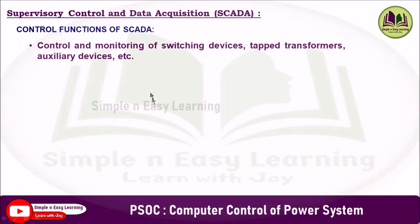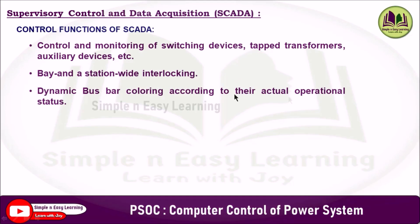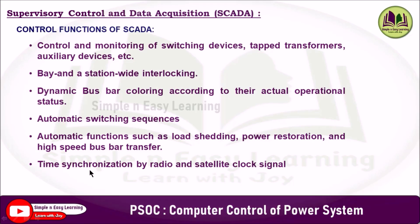The control functions of SCADA include control and monitoring of switching devices, tapped transformers, and auxiliary devices, as well as bay and station-wide interlocking. A single bay or a complete substation interlocking can be controlled using SCADA. Other control functions include dynamic bus bar coloring according to actual operational status, automatic switching sequences, automatic functions such as load shedding, power restoration and high-speed bus bar transfer, and time synchronization by radio and satellite clock signal.